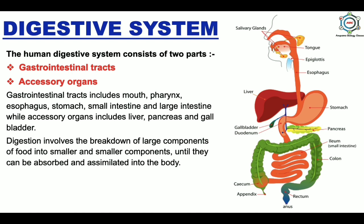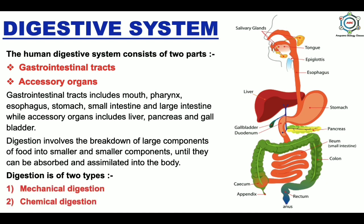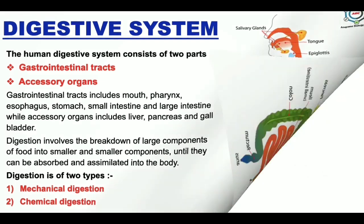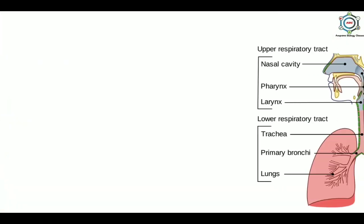Digestion involves the breakdown of large components of food into smaller components until they can be absorbed and assimilated into the body. Digestion is of two types: first is mechanical digestion, which involves physically breaking down food into smaller pieces, starting from the mouth; and second is chemical digestion, which involves breaking down food into simpler nutrients that can be used by the cells.